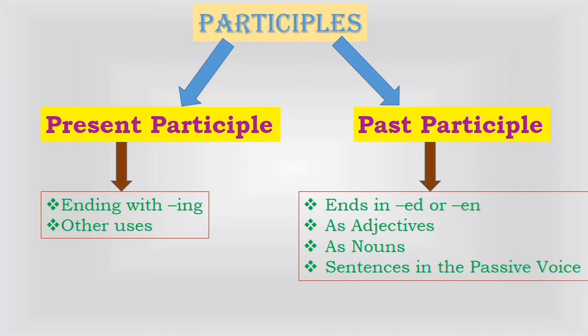Present participles have other uses too. The word 'walking' performs a different task in each of these sentences. For example: 'I am walking to the market to buy some fruit' — verb in continuous tense, the most common form. 'Walking is good exercise' — it is the subject of the sentence, used as a noun. 'We will go for a walking tour of the historical monuments' — here walking is used as an adjective.